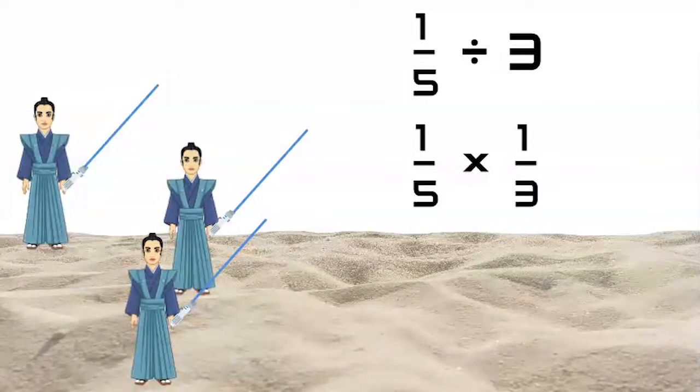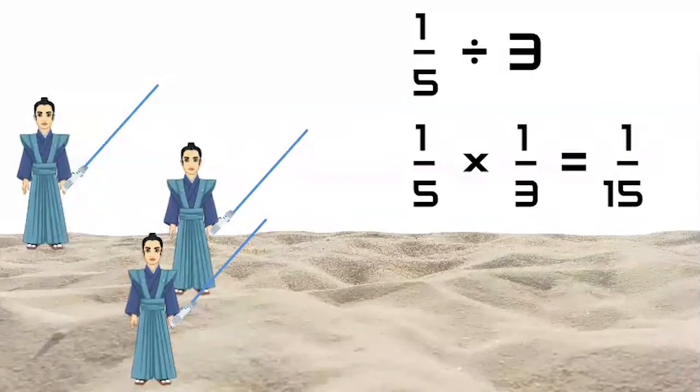Let's multiply the numerators together to get the numerator of the product. One times one equals one. Next, multiply the denominators together to get the denominator of the product. Five times three equals fifteen.